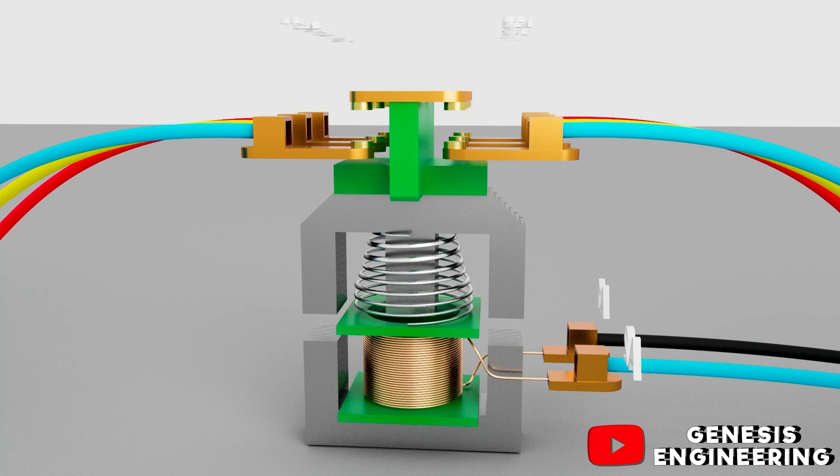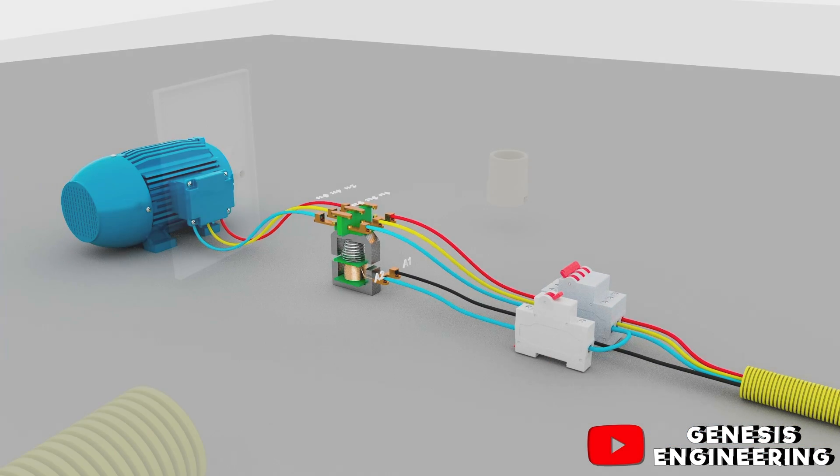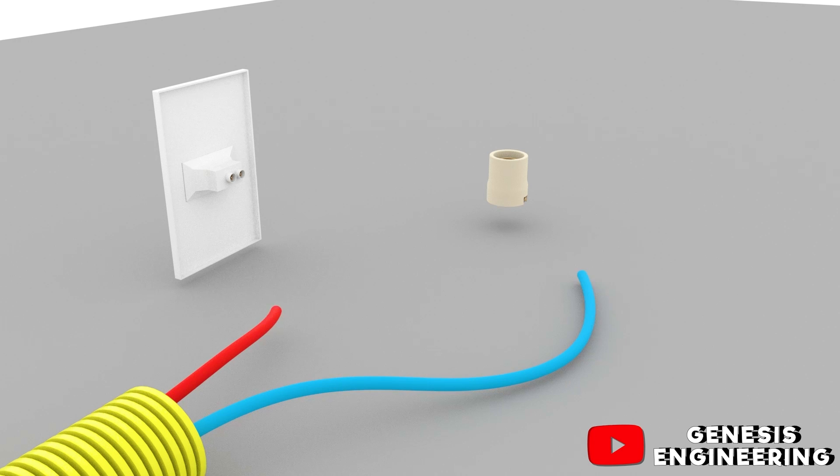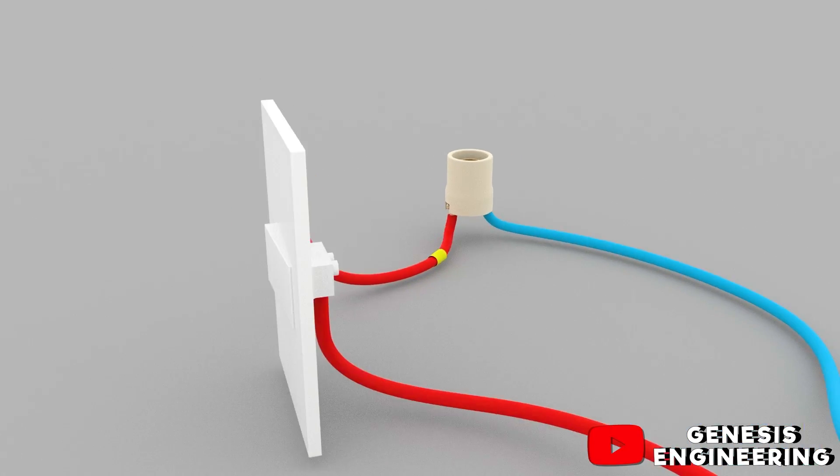We understand how the contactor works, now why is it used. Inside the residence, to be able to turn a lamp on and off, a simple switch is used to be able to activate it.